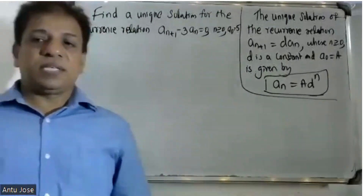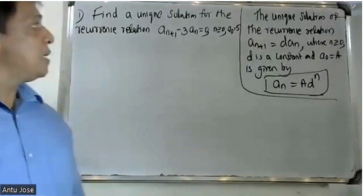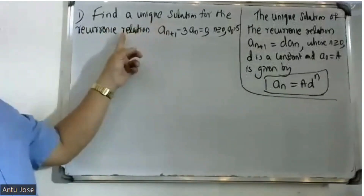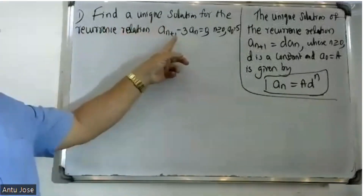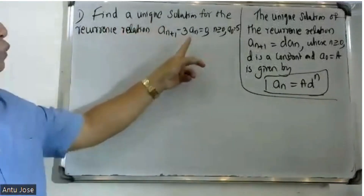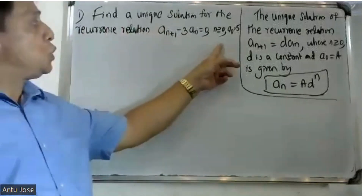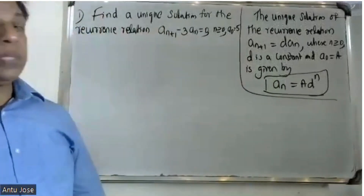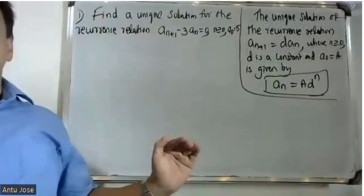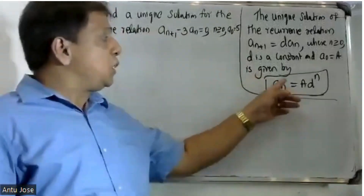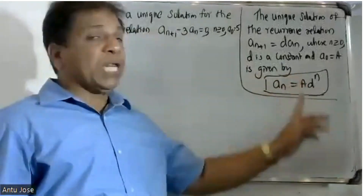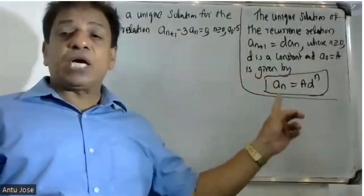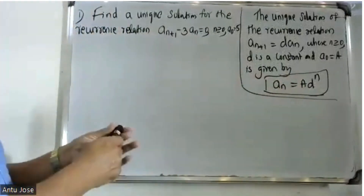Good morning students. Find a unique solution for the recurrence relation a_{n+1} - 3a_n = 0, where n is greater than or equal to 0, and a_0 is equal to 5. The unique solution uses the formula a_n = a_0 * d^n, where d is a constant and a equals a_0.